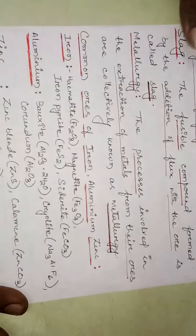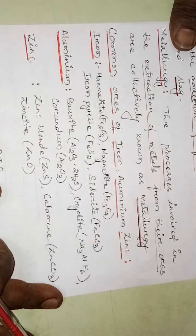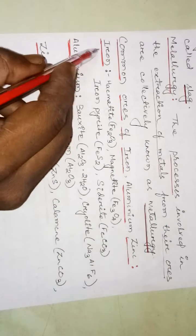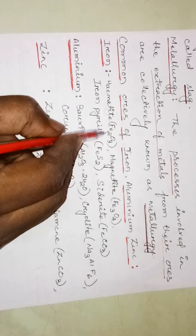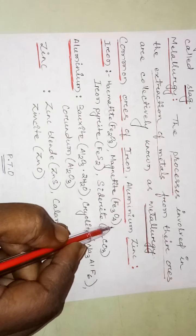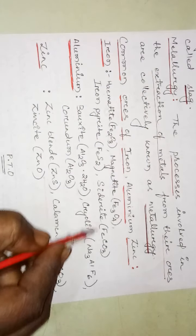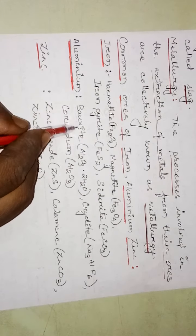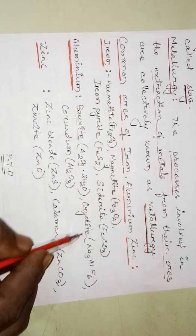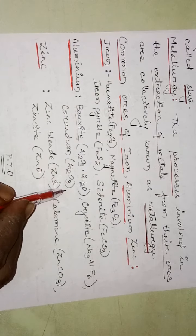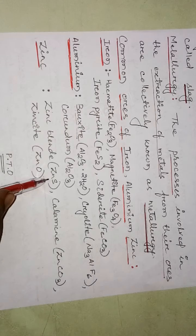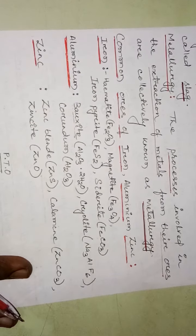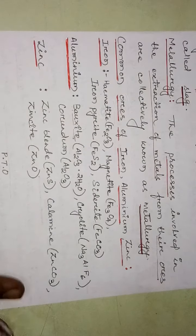Some common ores we will discuss now for iron, aluminium, and zinc. For iron: hematite (Fe₂O₃), magnetite (Fe₃O₄), iron pyrite (FeS₂), and siderite (FeCO₃). For aluminium: bauxite (Al₂O₃·2H₂O), cryolite (Na₃AlF₆), and corundum (Al₂O₃). For zinc: zinc blende (ZnS), calamine (zinc carbonate), and zincite (zinc oxide).